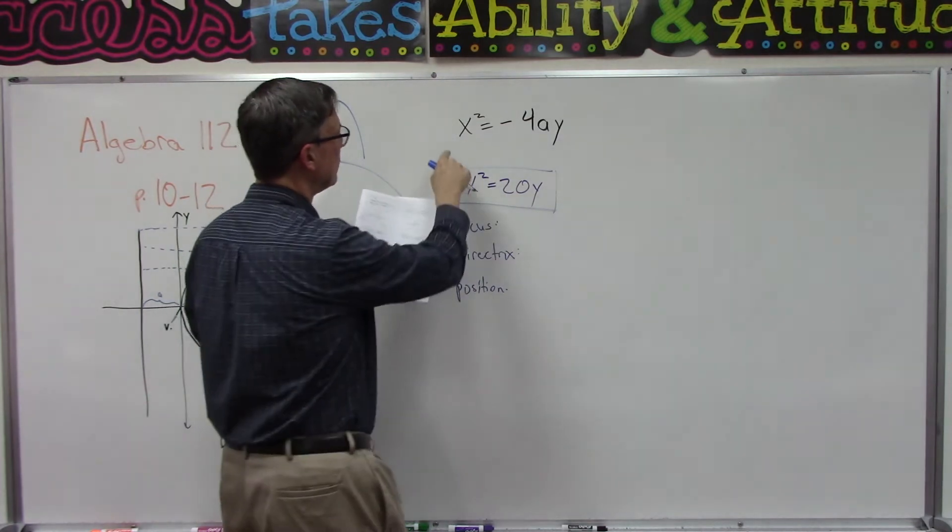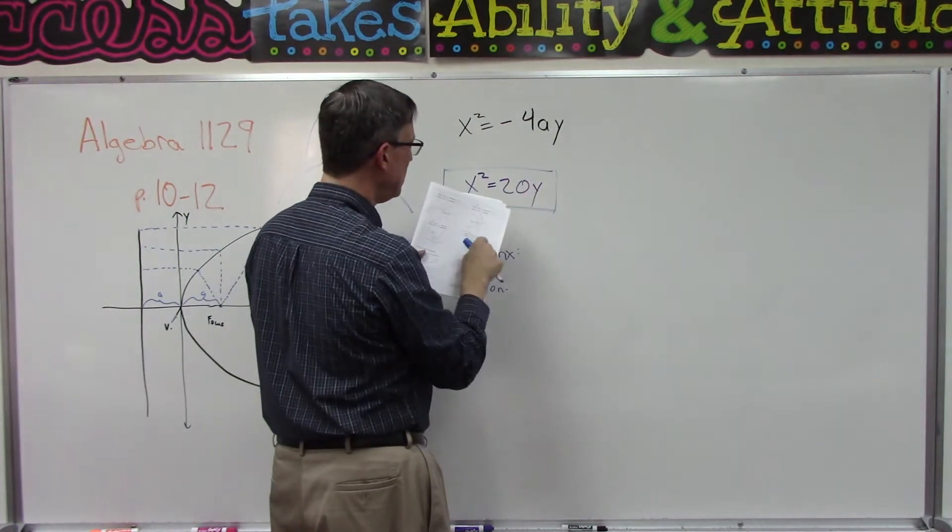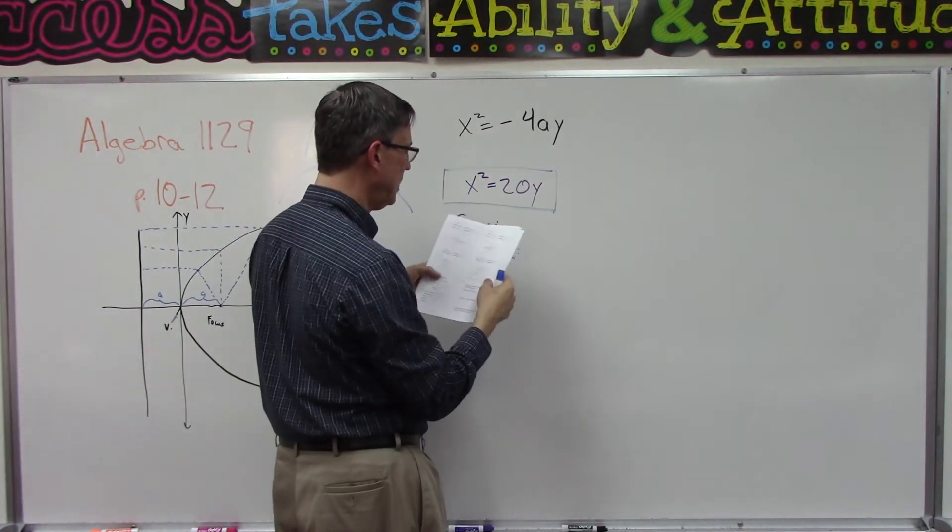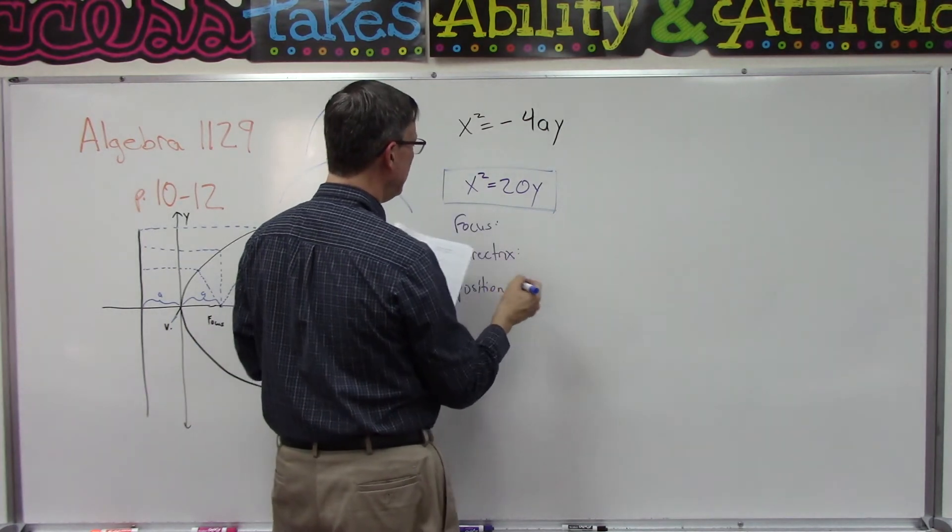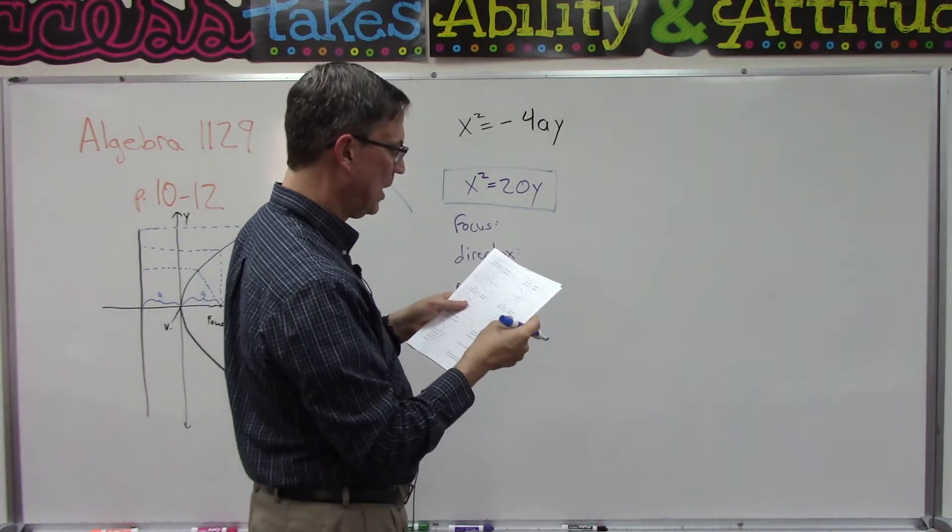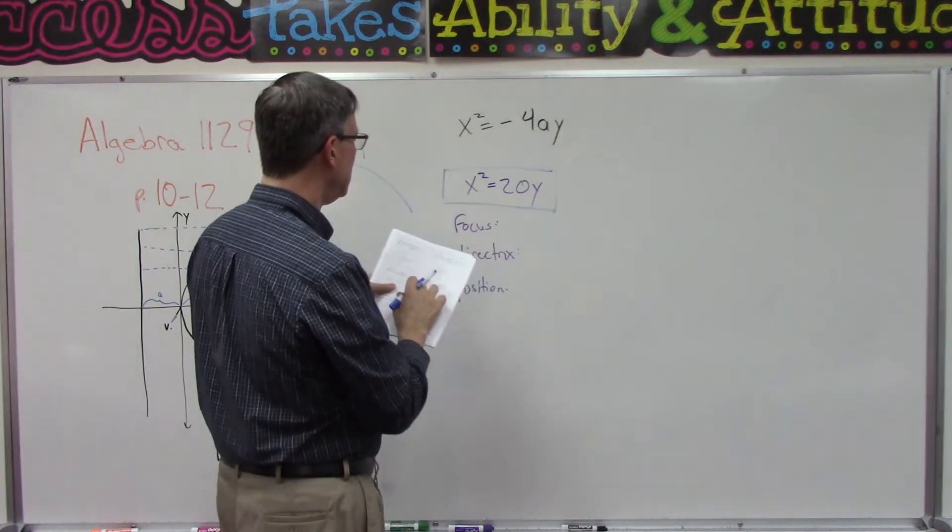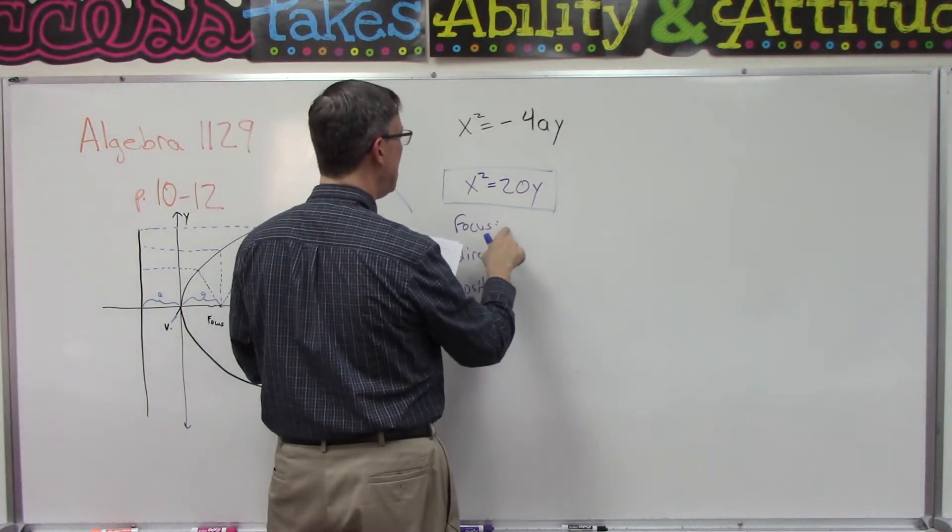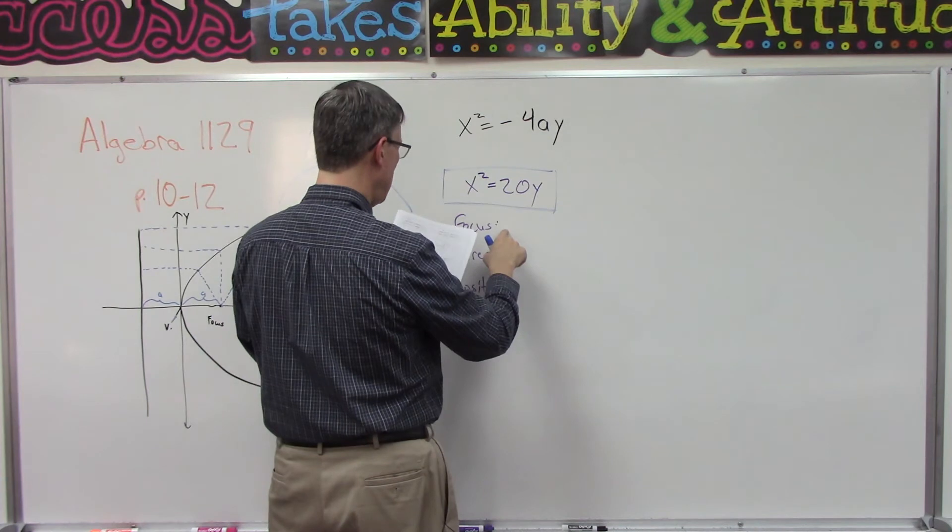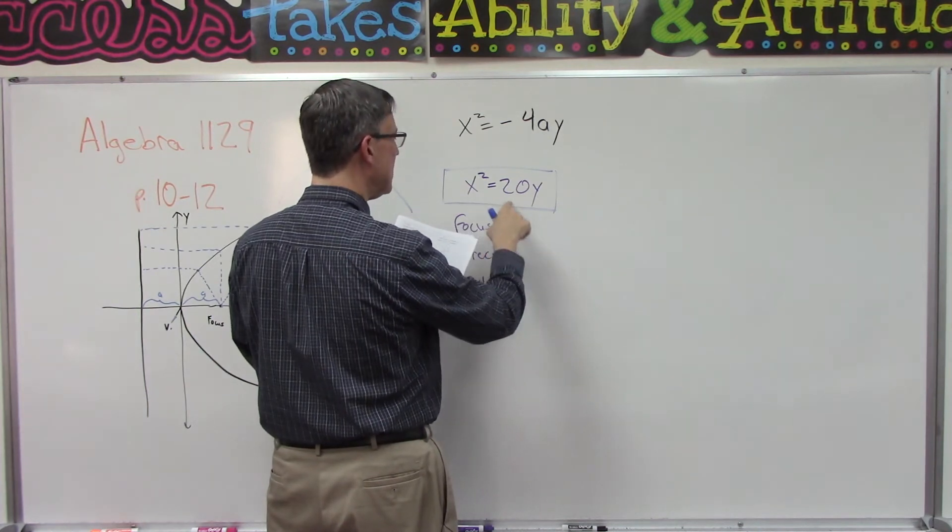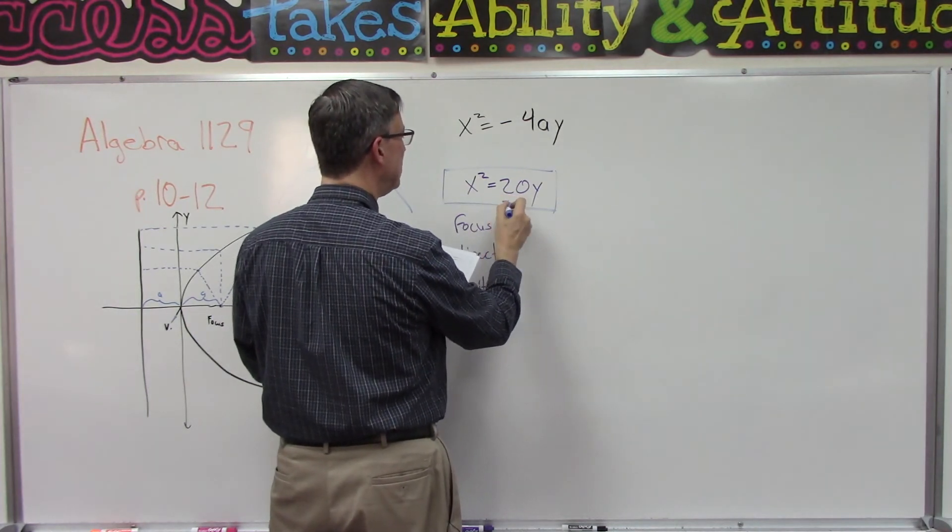Okay, so from here we can get all the information we need. So first of all, the vertex is going to be at zero zero, so I don't even need to write that down. It says that the focus is going to be at zero negative a. Now I'm looking at 20 here and I'm saying I don't see a there.